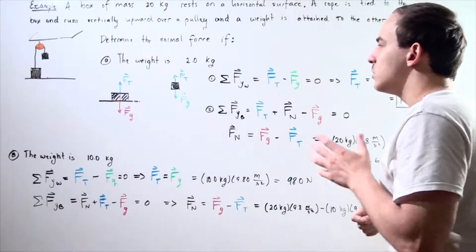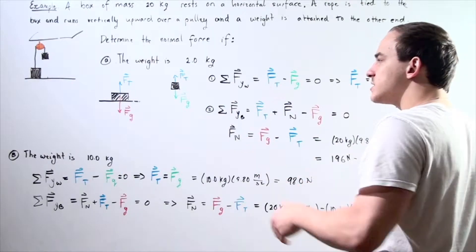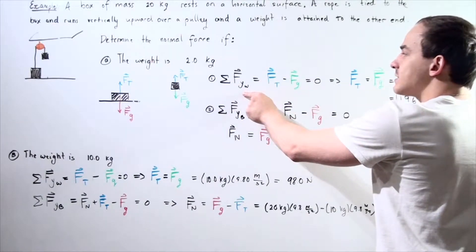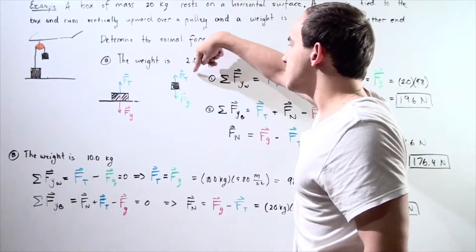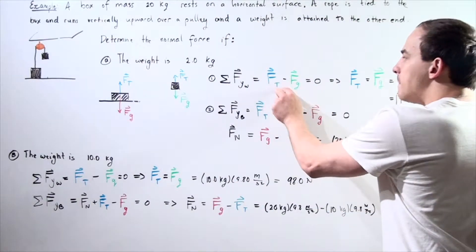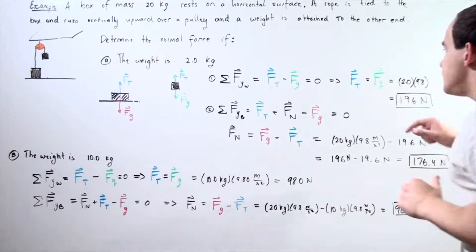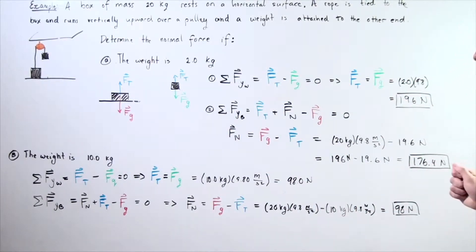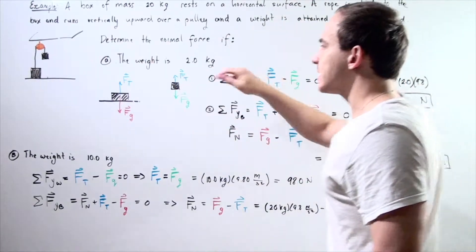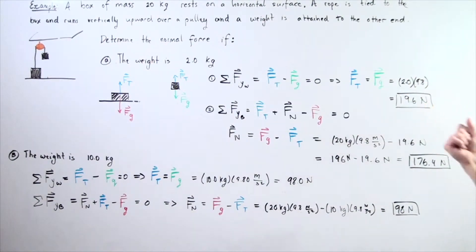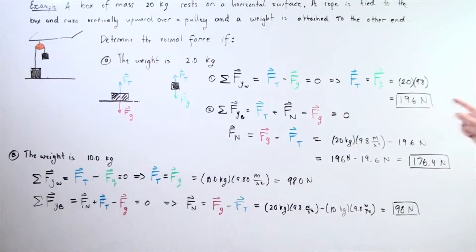We have 2 free body diagrams, giving us 2 equations. Let's sum all the forces along the y-axis for the hanging weight, choosing up as positive and down as negative. Tension minus force of gravity equals zero, since our objects are not moving. Rearranging, the tension equals the gravitational force on the hanging weight: 2 kilograms times 9.8 meters per second squared gives us 19.6 newtons.